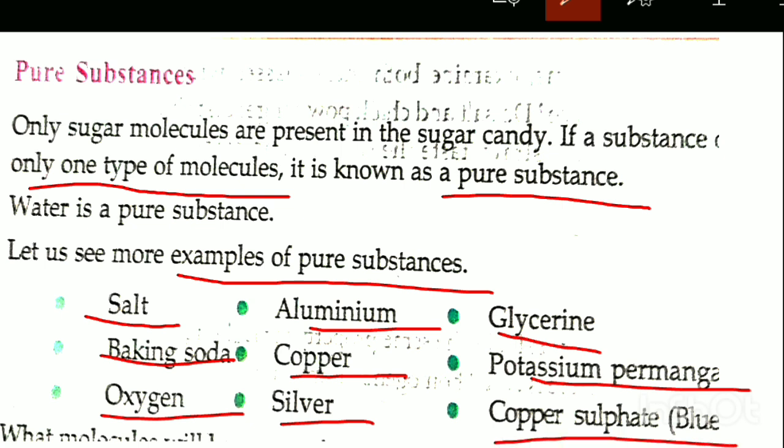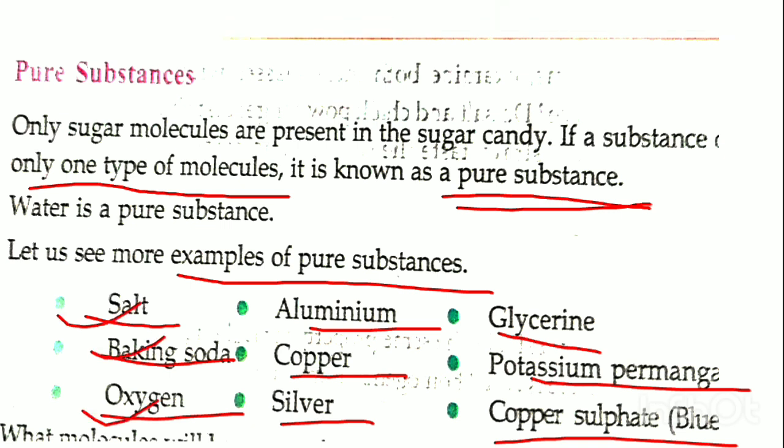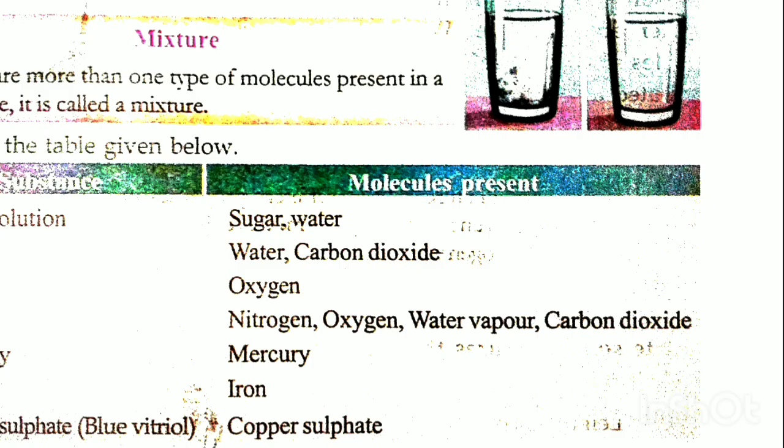Only one type of molecules is a pure substance. Pure substance is one type of molecules: water, salt, baking soda, oxygen. Here is another substance — one type of molecules is pure substance.